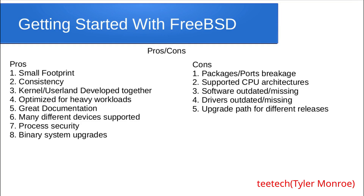Another con is drivers being outdated or missing. Occasionally, if it's new hardware — just like any operating system — you'll see a driver that isn't there, or one that's outdated and makes that hardware unstable. The last con, in my opinion, is the upgrade path for different releases. I downloaded Stable at one point and didn't realize you can't use binary patches on Stable — you have to compile from source. I only found that out after spending all the time setting it up as a desktop. You can only use binary system upgrades on release versions of FreeBSD, not the stable versions — though stable versions are potentially more stable code, and a release is just a slice of stable.